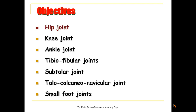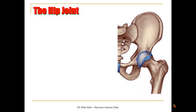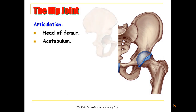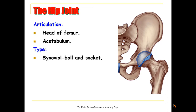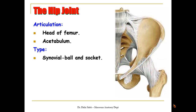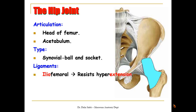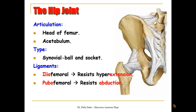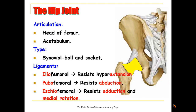The hip joint is made by the articulation of the head of the femur into the lunate surface of the acetabulum. It is a synovial ball and socket joint surrounded by a capsule that is reinforced by three main ligaments: the iliofemoral ligament, which resists hyperextension of the joint; the pubofemoral ligament, that resists abduction; and the ischiofemoral ligament, which resists abduction and medial rotation of the hip joint.